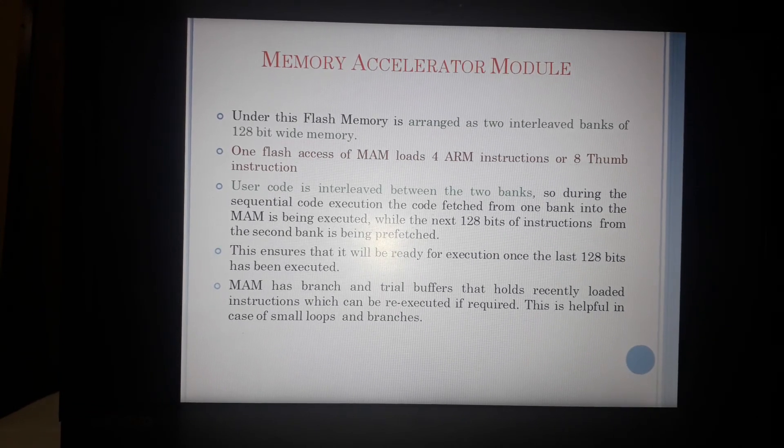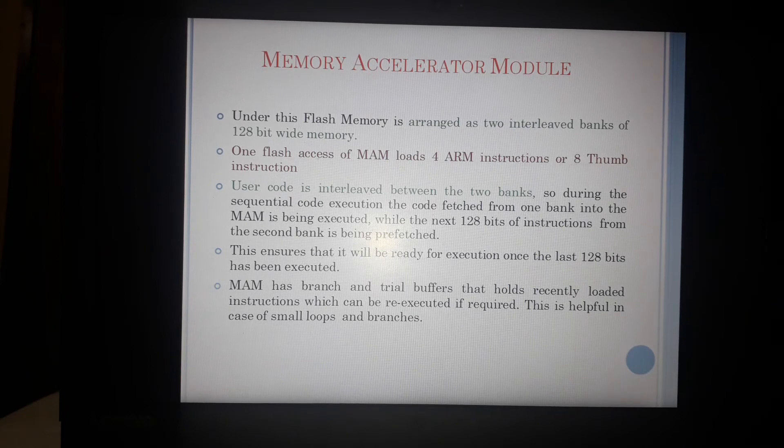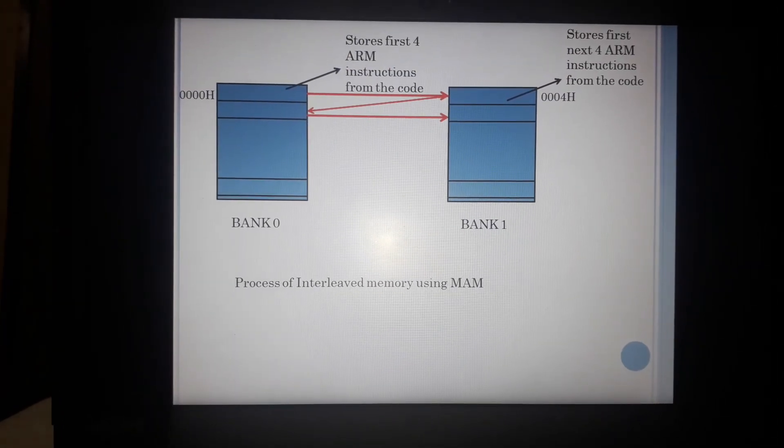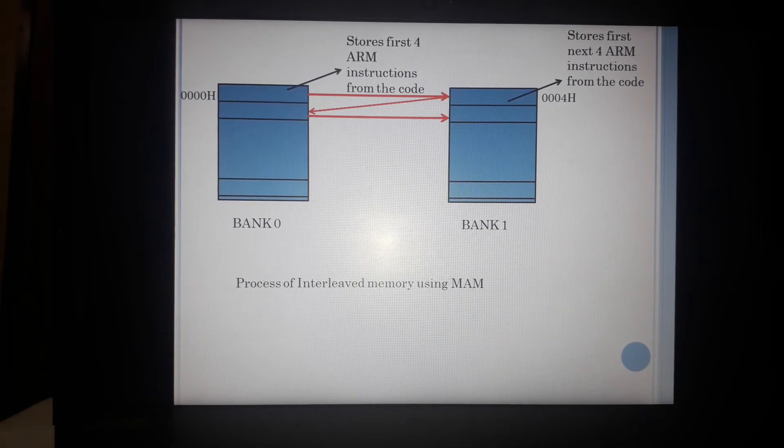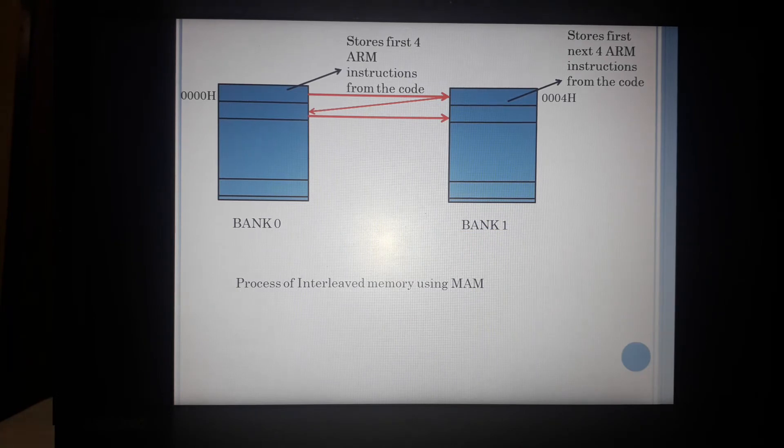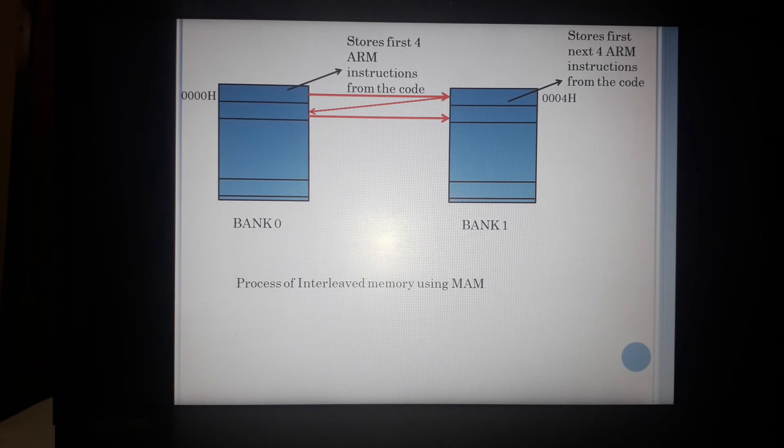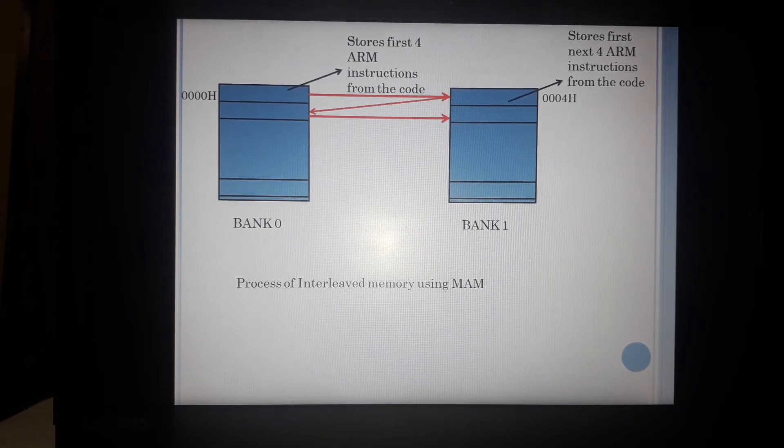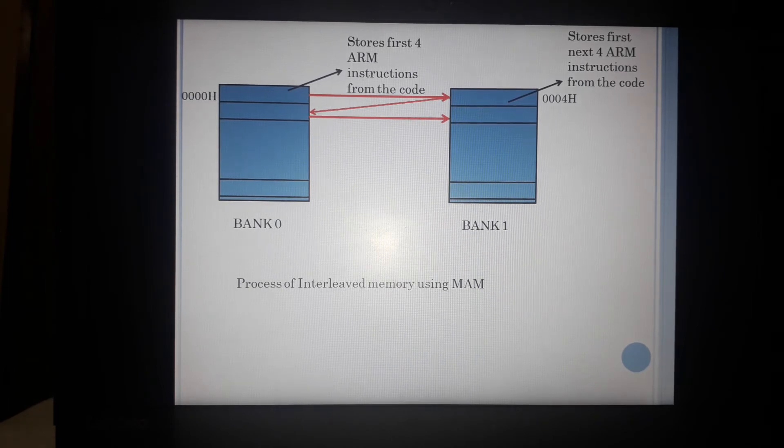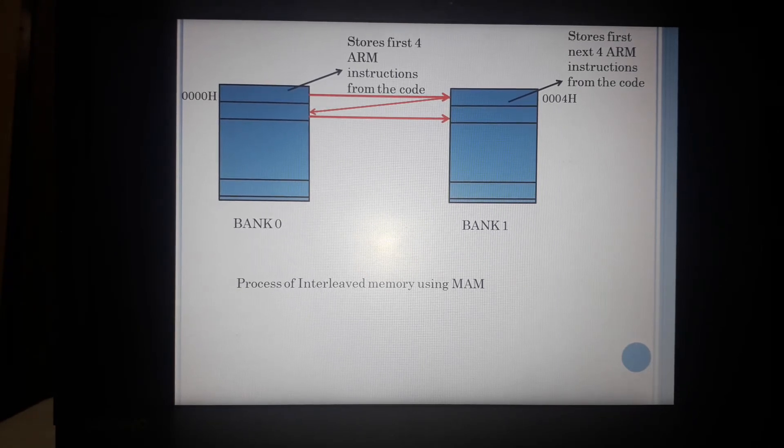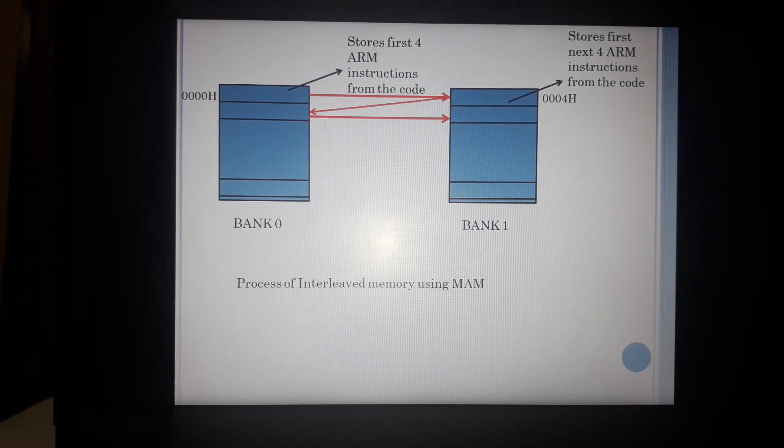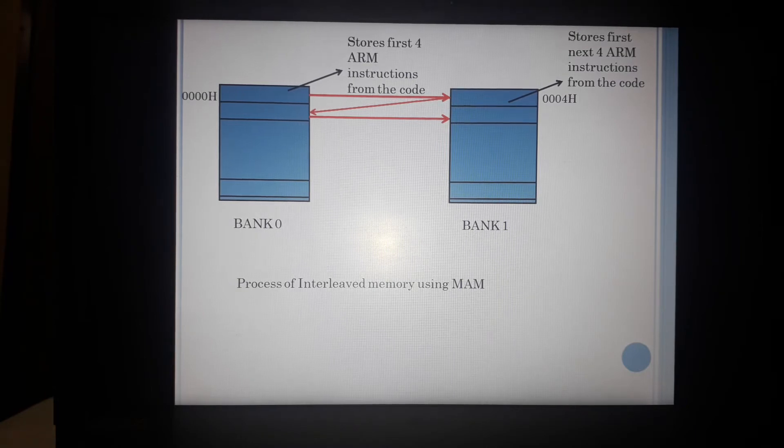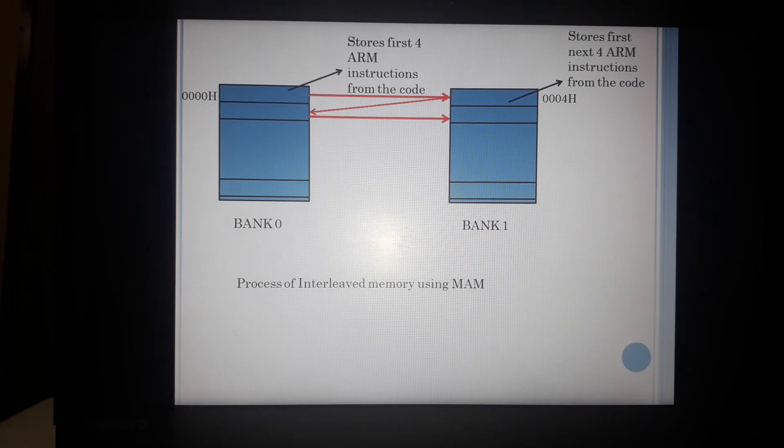Now what is the advantage of this arrangement? So I store my first instruction in bank 0 which is my first bank and next 4 instructions in the other bank. Both of these banks, they will be connected by independent address buses which will be communicating with the memory accelerator module. And this memory accelerator module in turn would be connected to processor or ARM7 CPU through local bus. So whenever I have to access the first 4 instructions, they would be independently brought in the flash memory and fill in the memories from 000h in bank 0 to 0003. So 4 memory locations they would be filled.